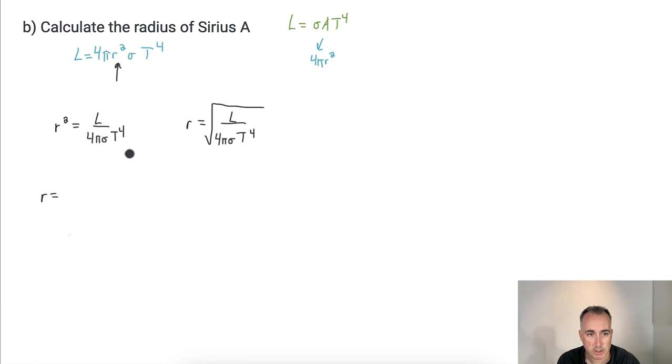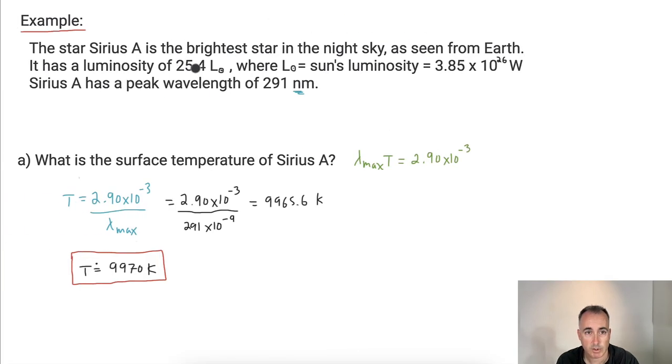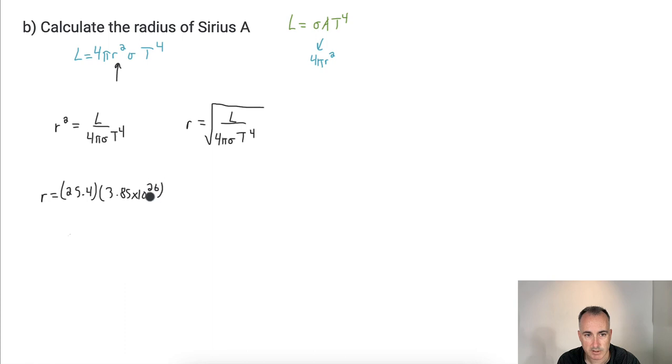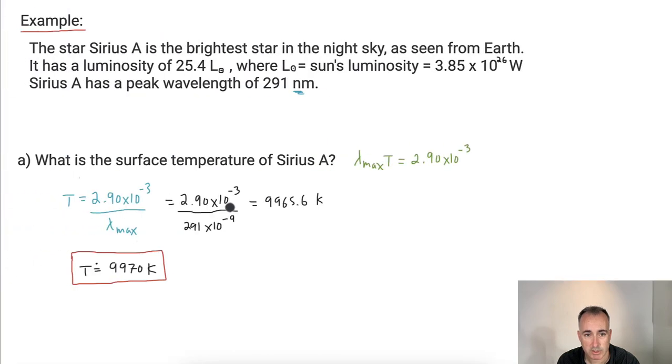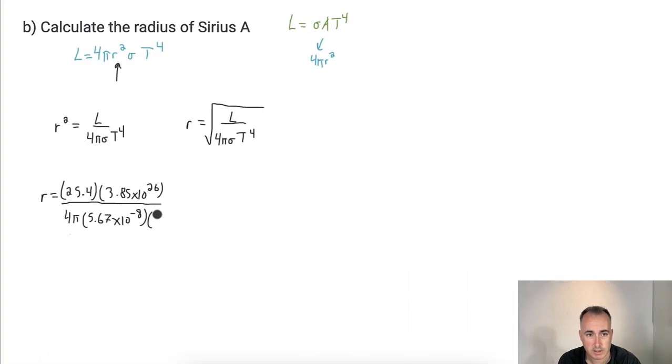That means to get r squared on its own, it'll be L divided by 4 times pi times sigma times T to the fourth. So that means r squared equals L over 4 pi sigma T to the fourth. Well, therefore, I can just say r is the square root of that. Technically you should do plus or minus the square root, but because we consider distances to be positive, we'll just use the positive version here. So let me just put in all my numbers then. Luminosity is going to be 25.4 times 3.85 times 10 to the 26, so this is the luminosity of the sun times the luminosity of Sirius. It tells you it's 25 times more luminous than our sun. All that divided by 4 times pi times sigma, which is 5.67 times 10 to the minus 8.